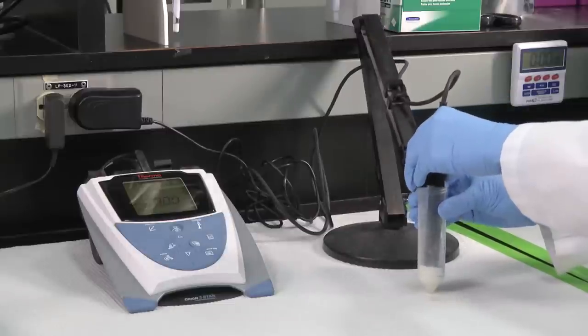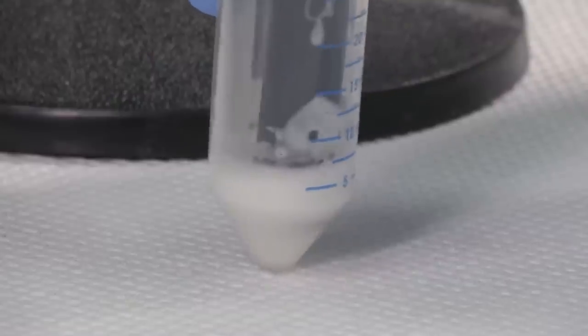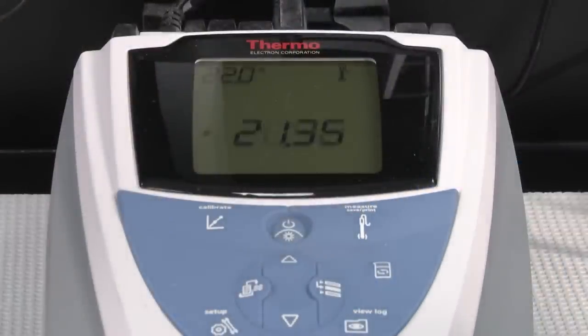Measure the conductivity of the emulsion, making sure that the conductivity probe is fully immersed in the emulsion. Record the conductivity for the amount of oil used. You may notice the reading may fluctuate a little. That's normal.